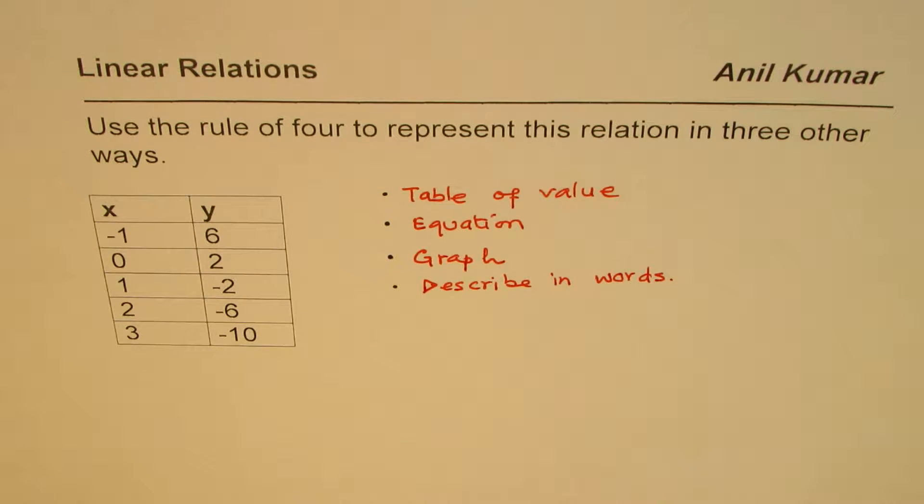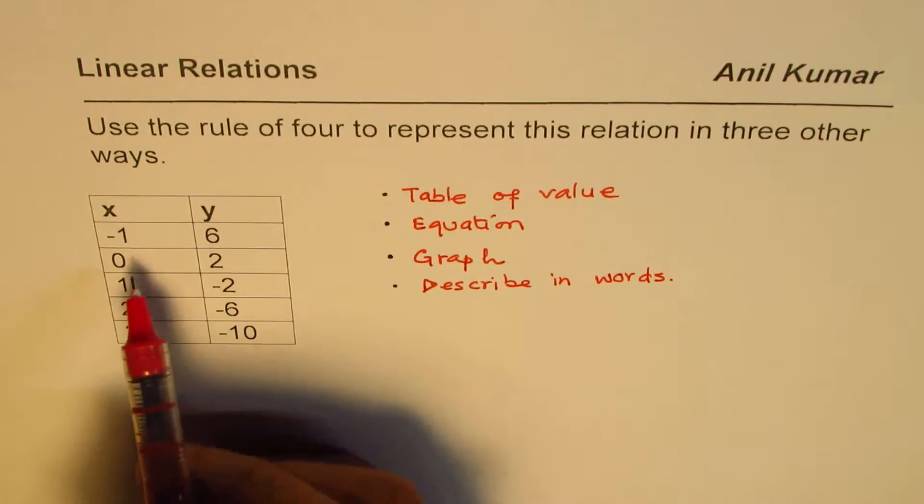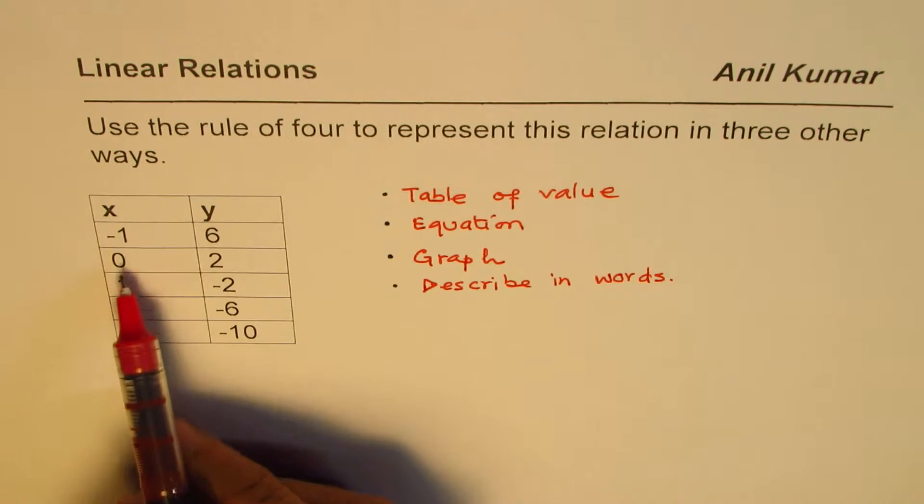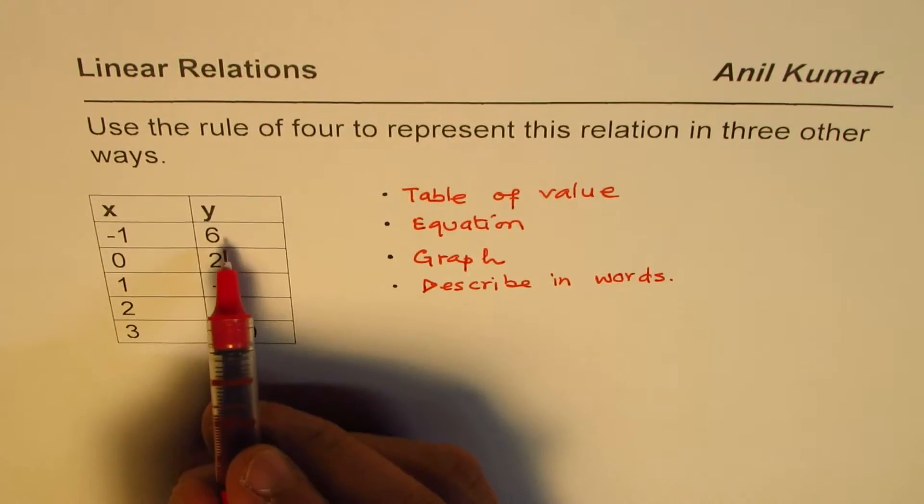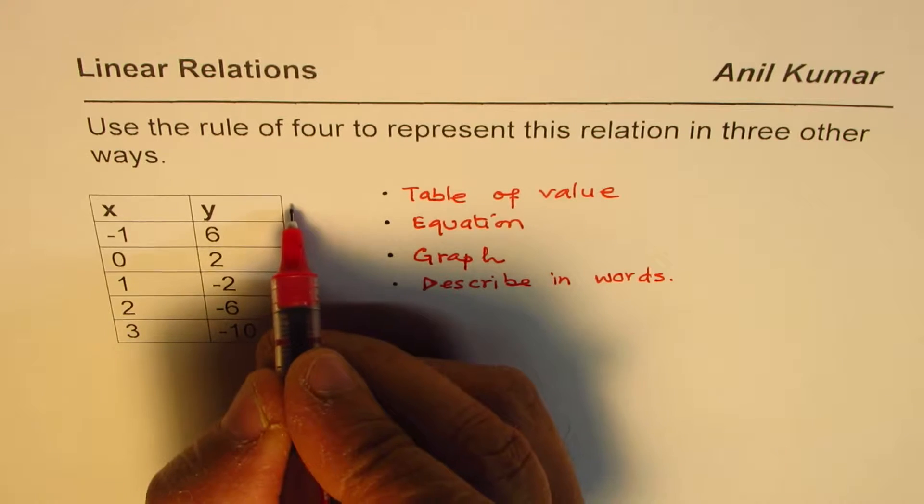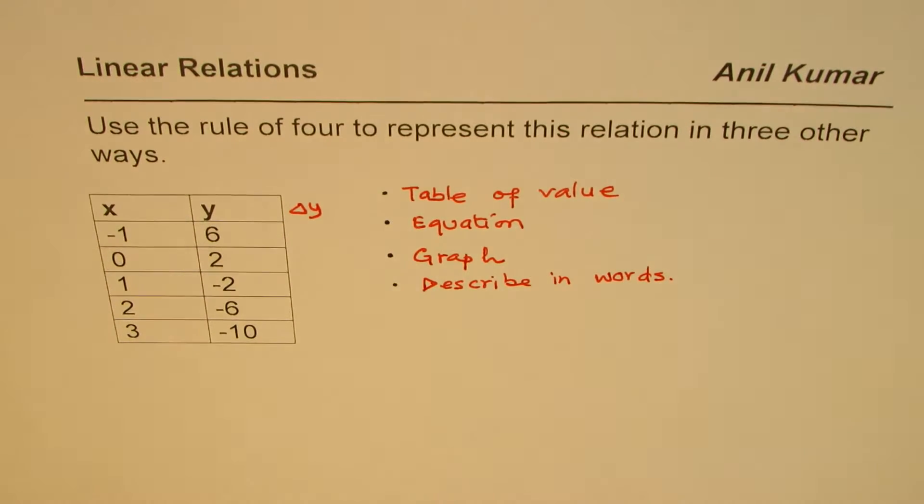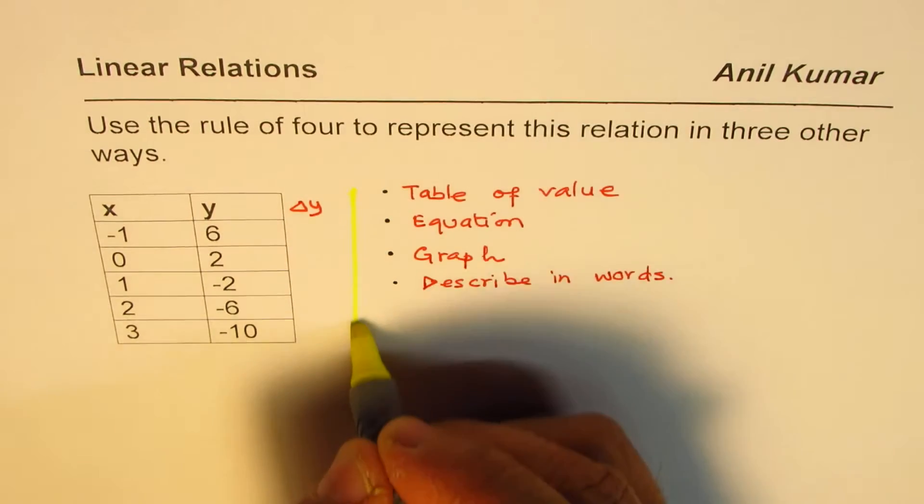Now, let's try to find the equation from the table of values. We have x rising by one unit, minus 1, 0, 1, 2, 3. And what is the change in y? So, what we will do here is, we will find the change in y. That is, I am writing as delta y. So, let me just divide this space.